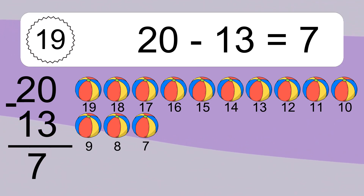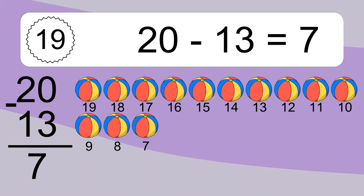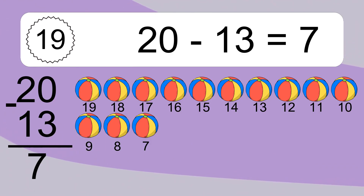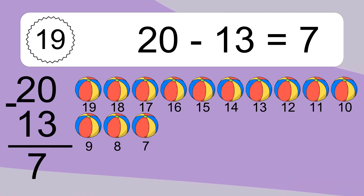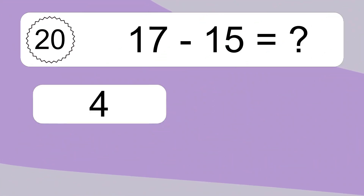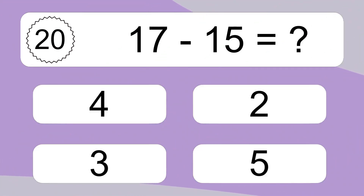Let's count it: 19, 18, 17, 16, 15, 14, 13, 12, 11, 10, 9, 8, 7. 17 minus 15 equals what?